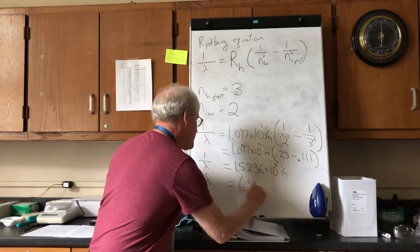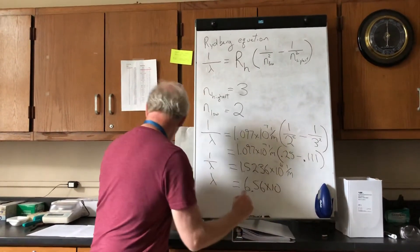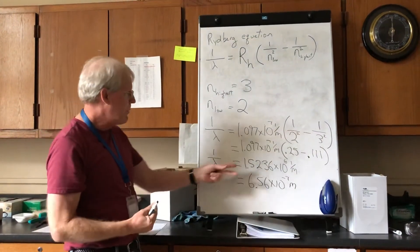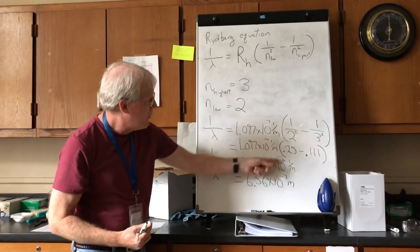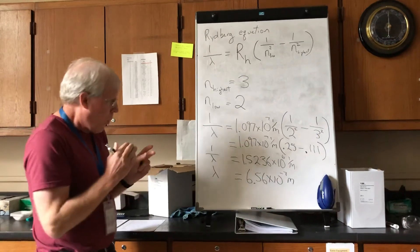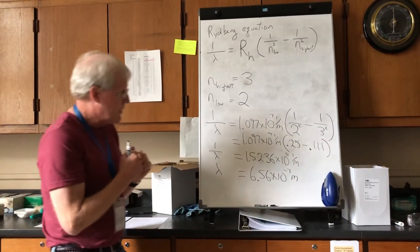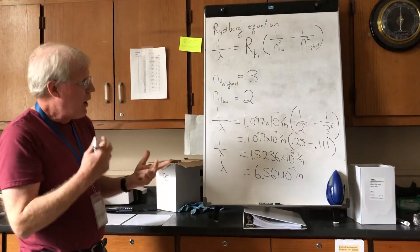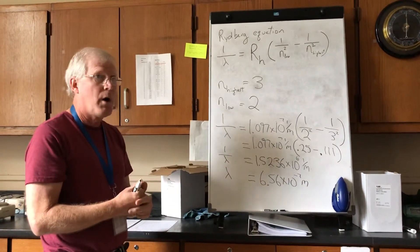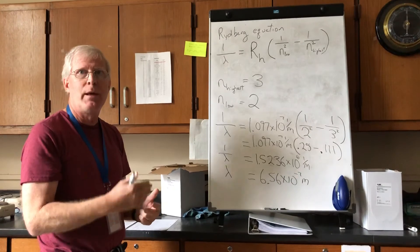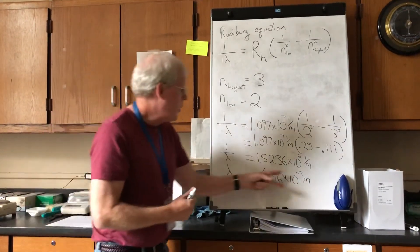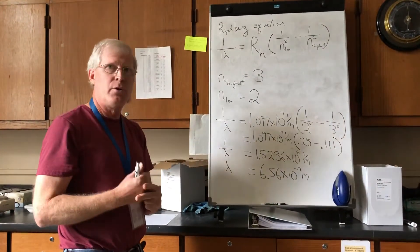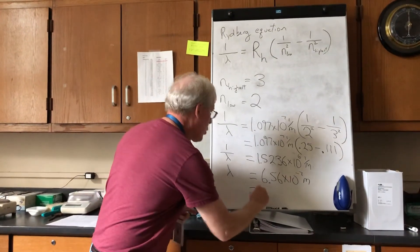When all is said and done, the wavelength turns out to be 6.56 times 10 to the negative 7 meters. That sounds about right. One small conversion we can do is that we've got it in the SI unit of meter, but oftentimes when we talk about visible light, we'll use nanometers. So you would need to convert this into nanometers, which I'm not going to show you how to do - you should be able to do that. If you do it correctly, you should get about 656 nanometers.